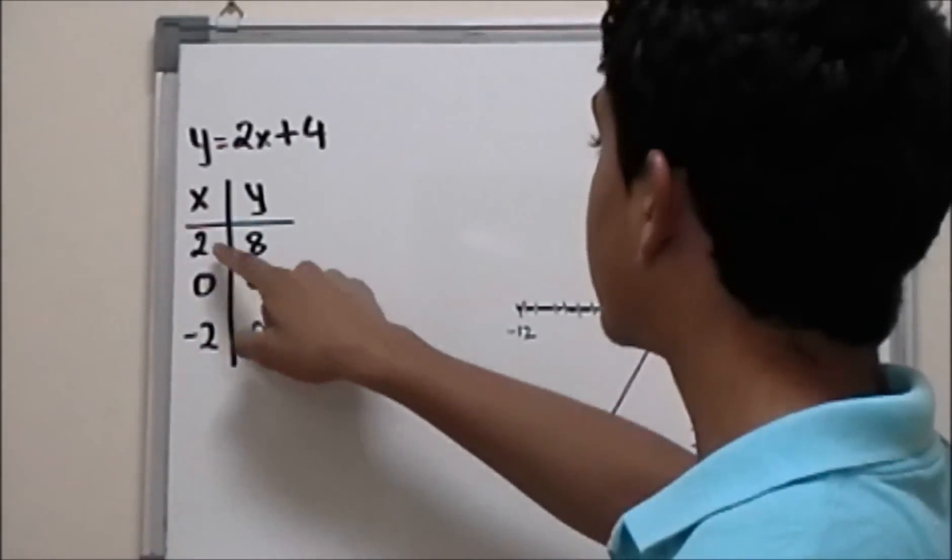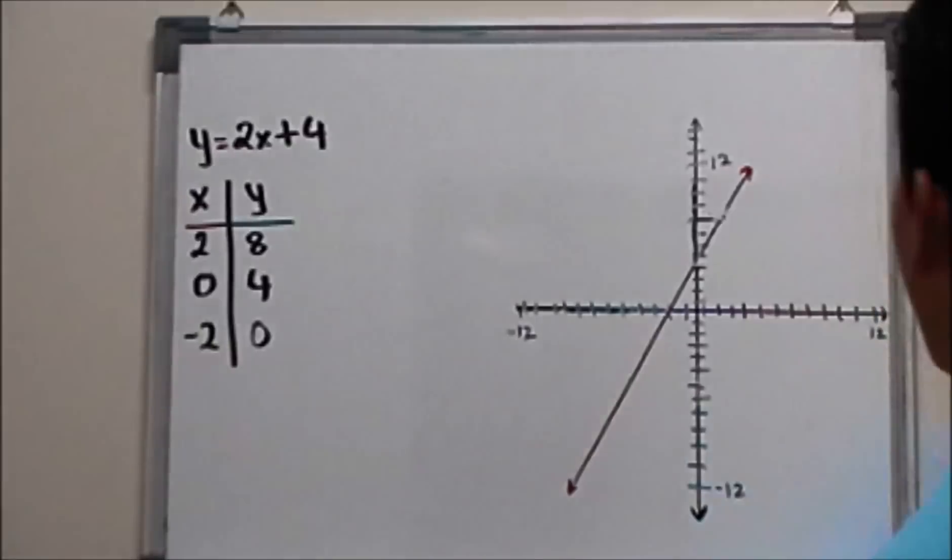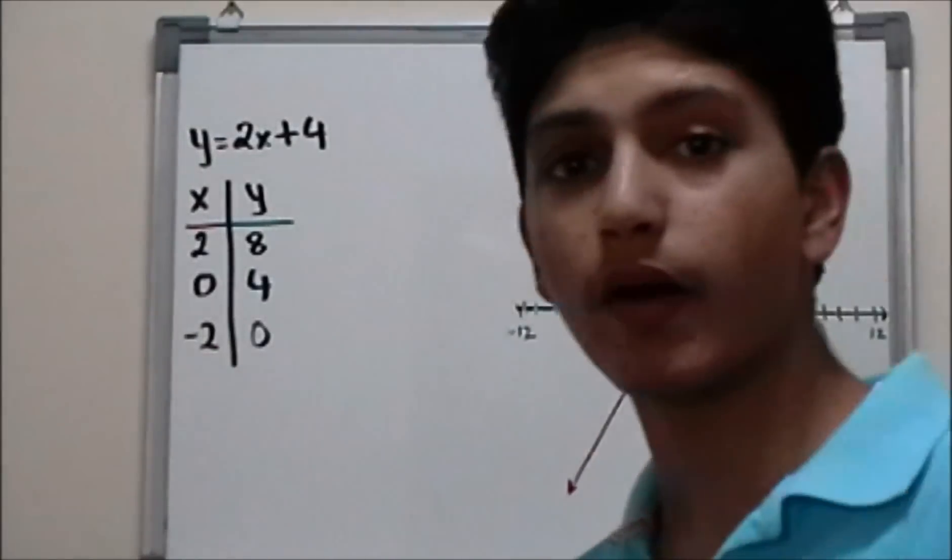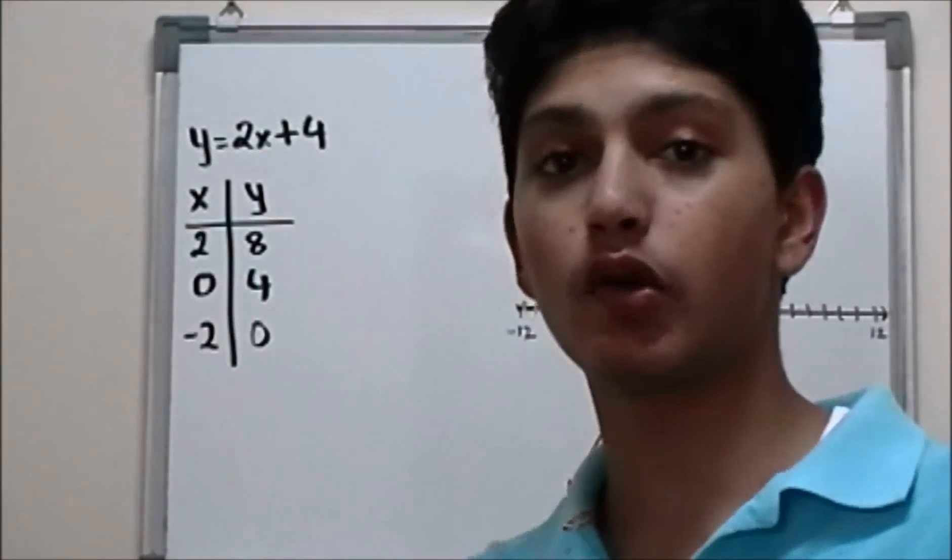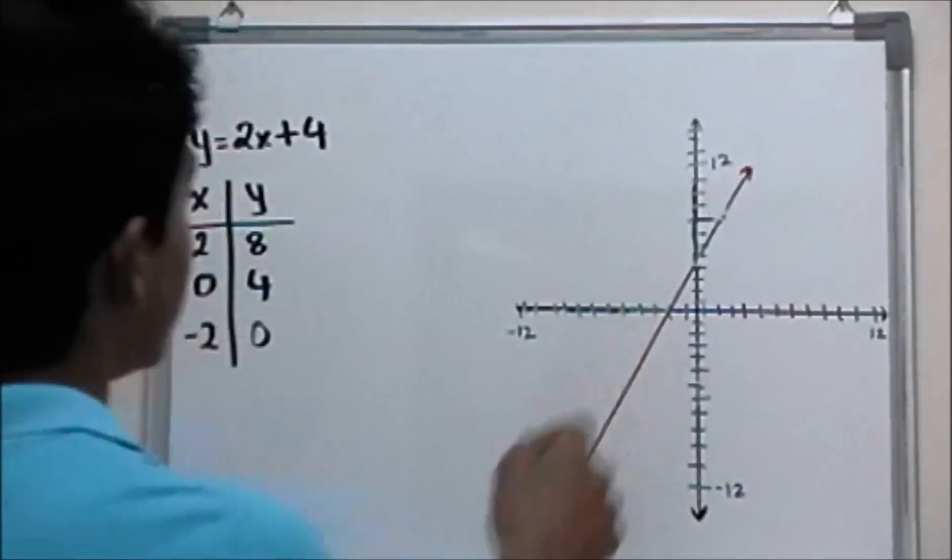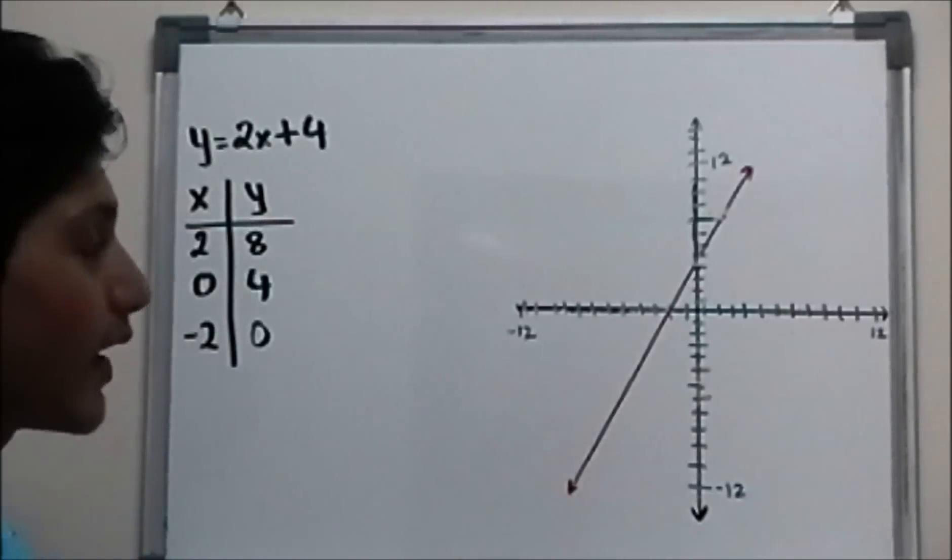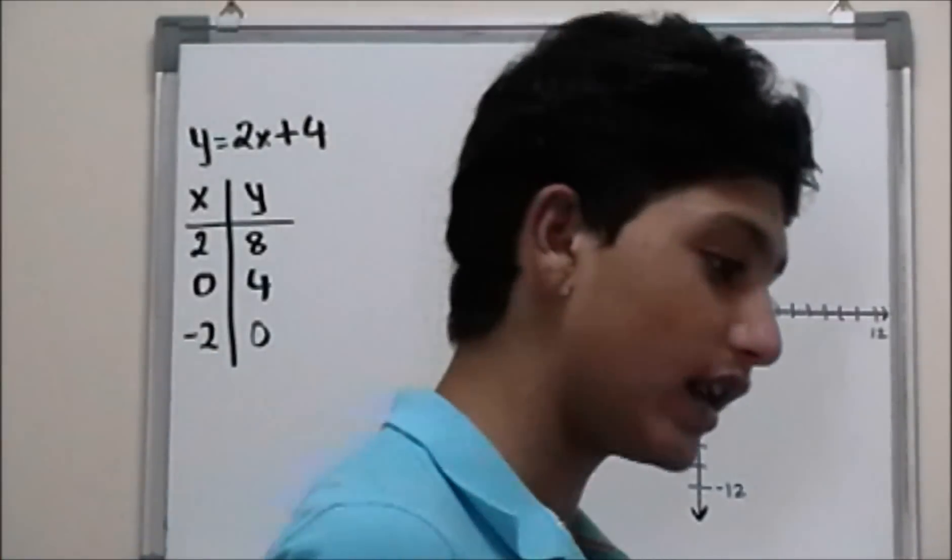We got the x and y values by doing point plotting method. If you don't know what point plotting method is, go back to my previous video. If you put that information in graph, we would have a line, which is a straight line.